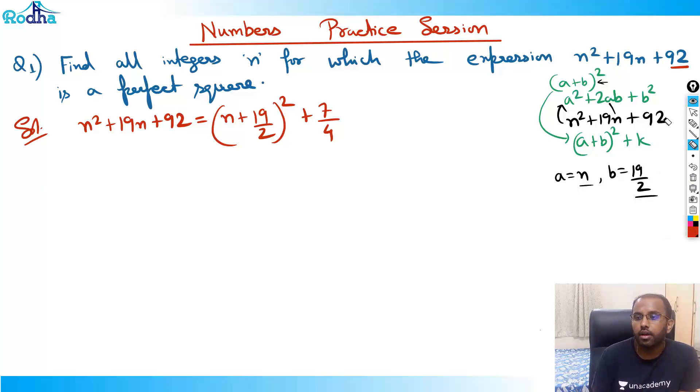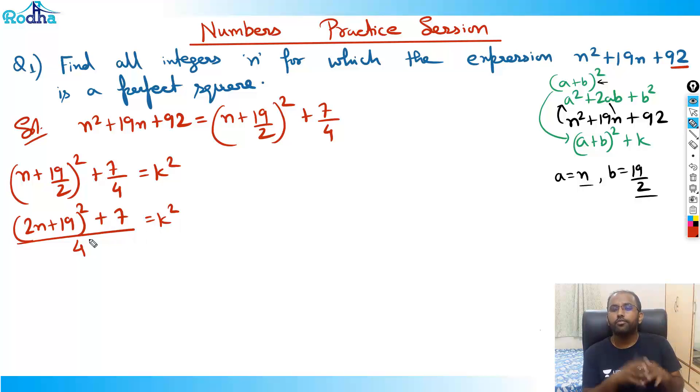This question says that (n + 19/2)² + 7/4 should be a perfect square, let's say it is K². Now I can write this equation as (2n + 19)² + 7 divided by 4 equals K². Always in such kind of equation, try to get variables on one side and integer on the other side. If I try to solve it guys, I will get that 4K² - (2n + 19)² is equal to 7.